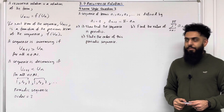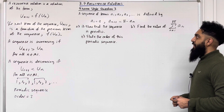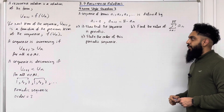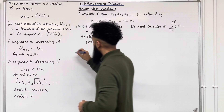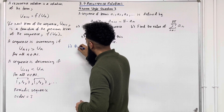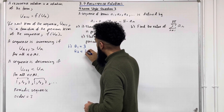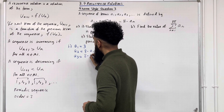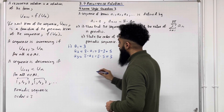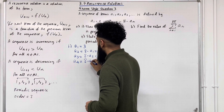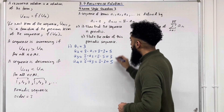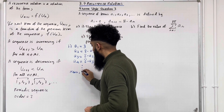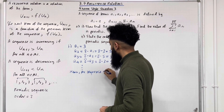Let's look at exam style question 3. A sequence a1, a2, a3, ... is defined by a1 = 3 and a_(N+1) = 8 - a_N. Part A, part 1: show that the sequence is periodic. We know a1 = 3, a2 = 8 - 3 = 5, a3 = 8 - 5 = 3, a4 = 8 - 3 = 5. We have repetitions in cycles of 2. Hence the sequence is periodic.